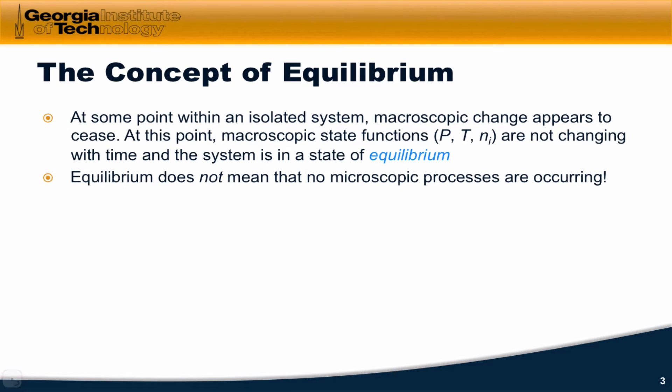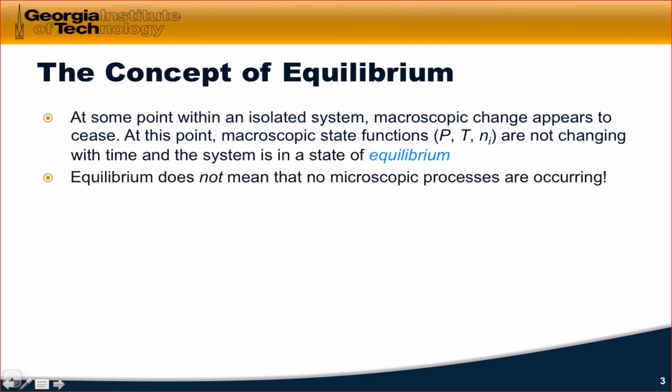Note, however, that equilibrium does not mean that no microscopic processes are taking place. If we look back again at this ideal gas example, the gas particles are still bouncing around within the container, and there is a small but finite chance that they might spontaneously, for a brief moment in time, organize themselves into blue on the left and red on the right. It just means that macroscopically, on the average, state functions are not changing with time.